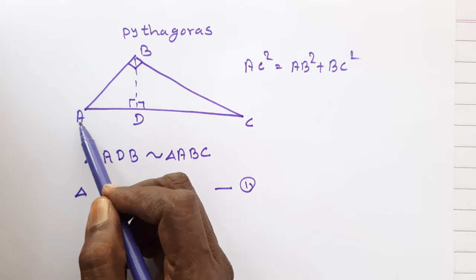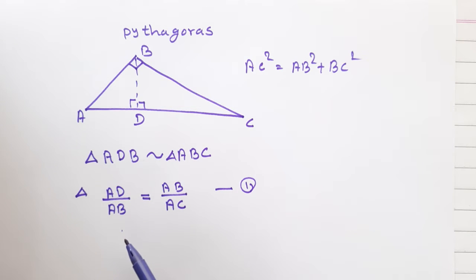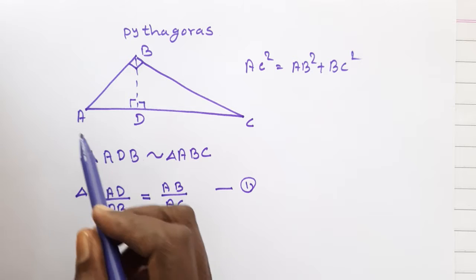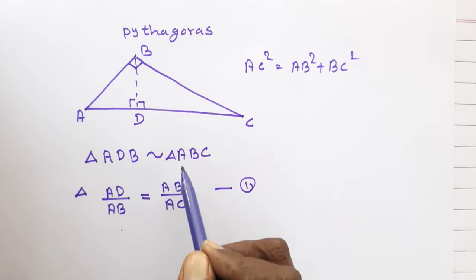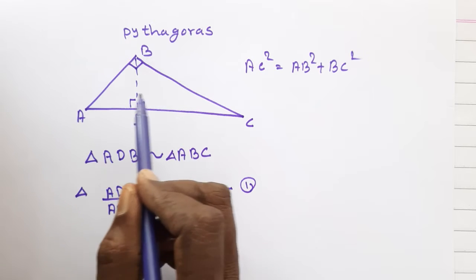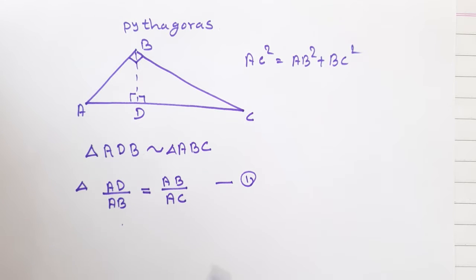AB is very small compared to AD, that is AD by AB. And AB is the smallest in triangle ABC. Then the hypotenuse is AC, that is written as AC.